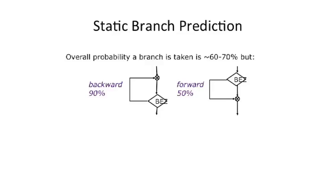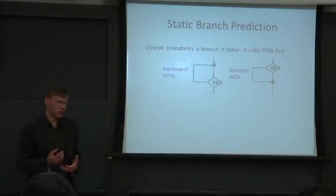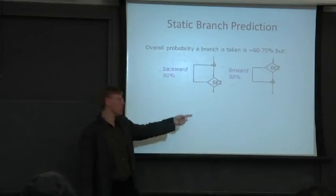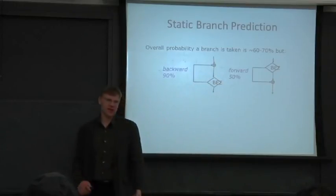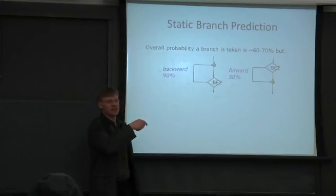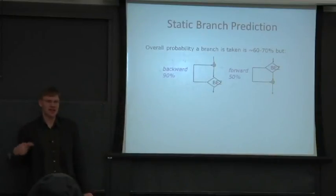So let's look at some basic rules of thumb here about static prediction. The overall probability the branch is taken out of something like SpecInt is 60 to 70%, but it's not equally distributed. Backwards branches have a much higher probability of being taken than forward branches. Why is this? Yes, so loops with high probability, by definition to be a loop, you're going to have to jump backwards. If you jump forwards, it's pretty hard to loop. So if you jump backwards, it's a loop, and in fact, people like to execute loops and stay in loops for a while, because that's where a lot of work is done. So if you're sitting in a loop and you're just spinning in this, this is increasing the probability that the backwards branch is taken, and that has a high probability.